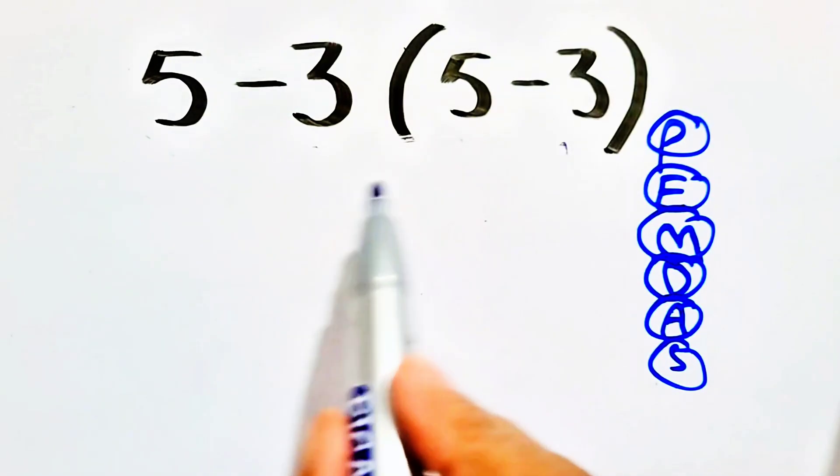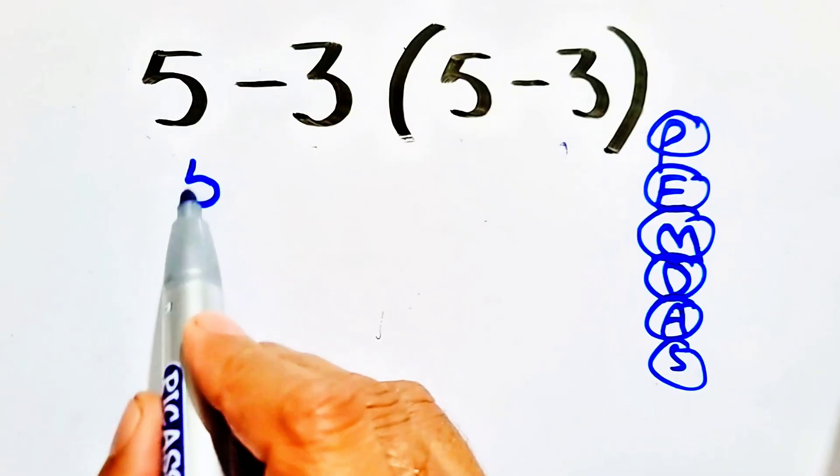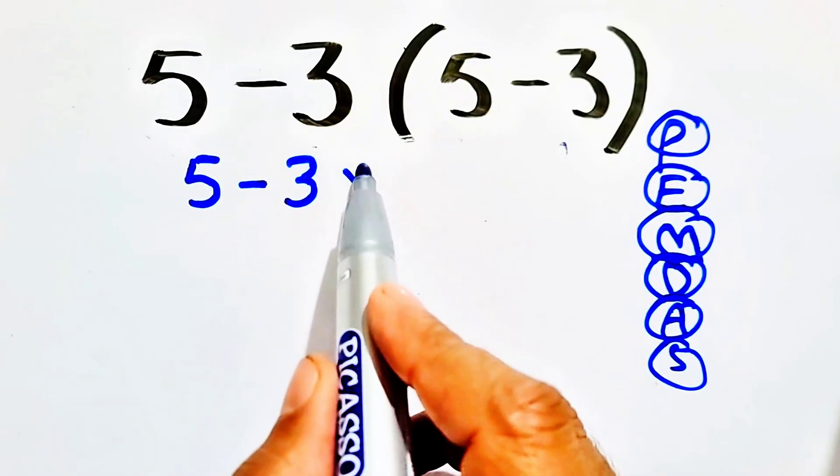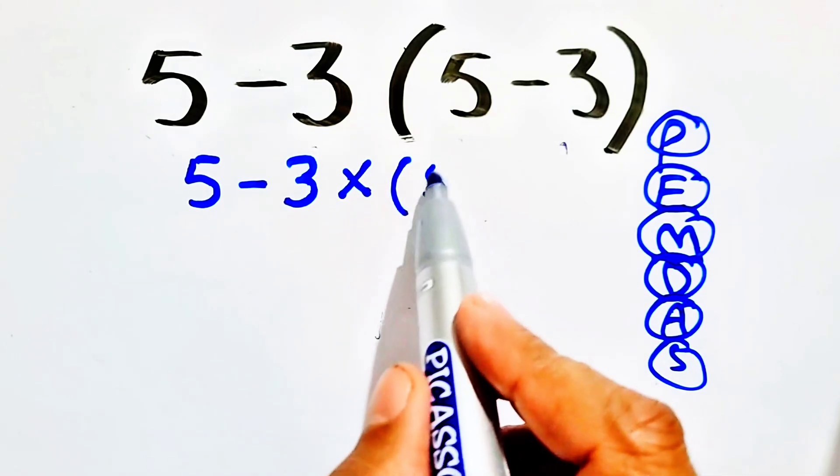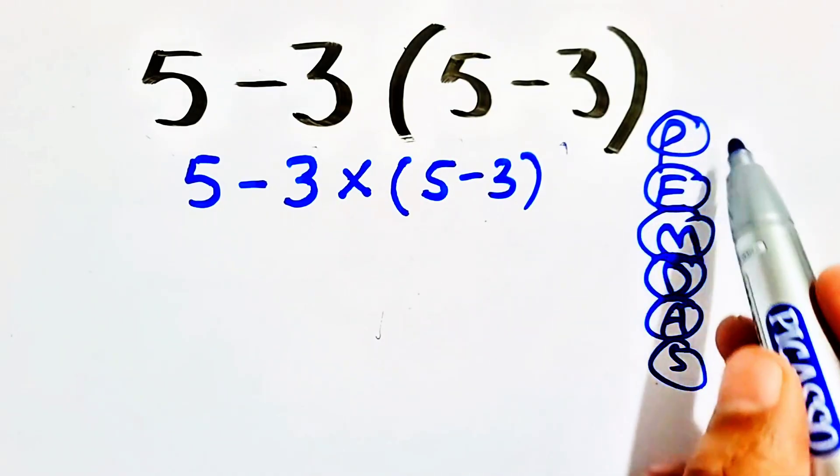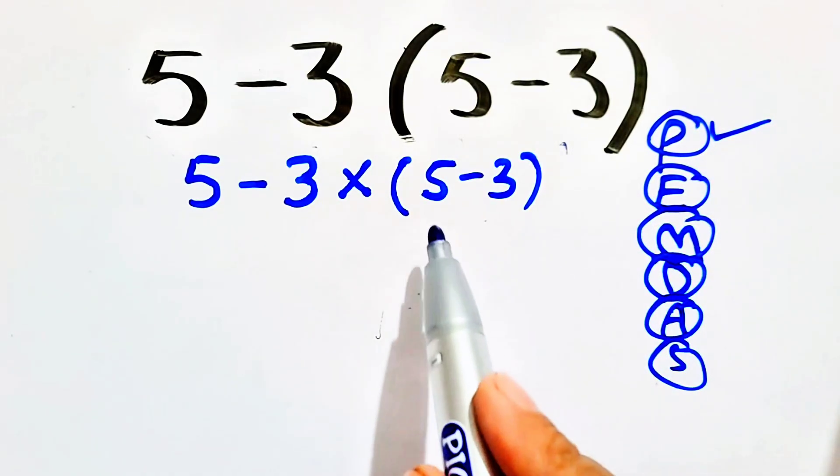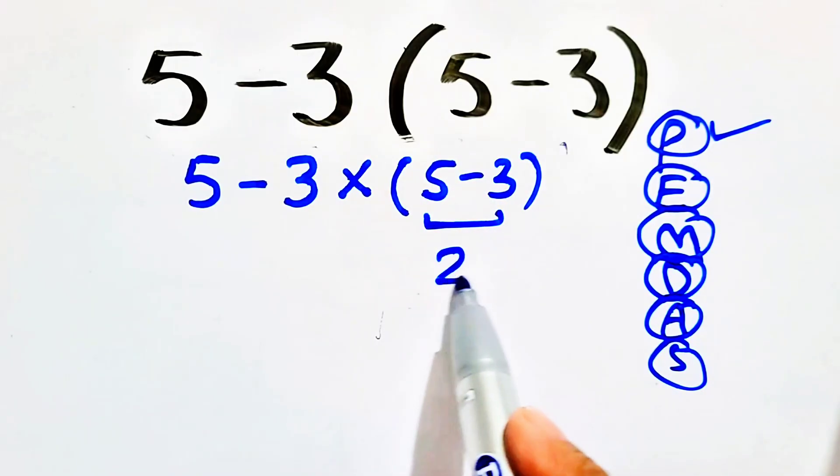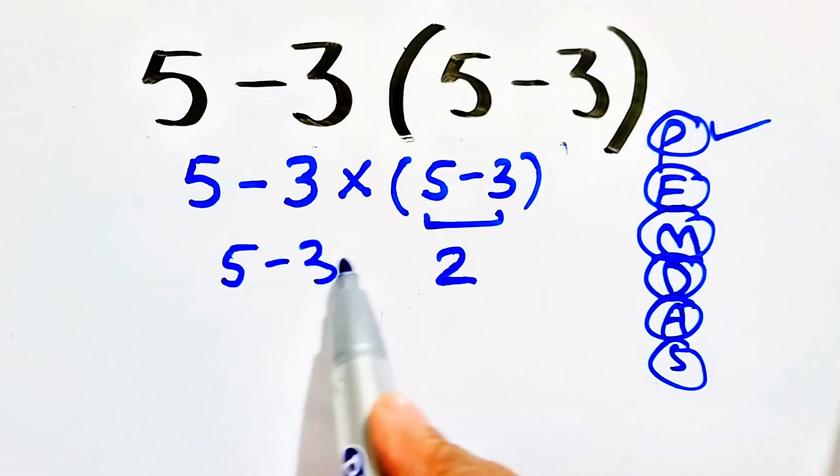So we can rewrite this question as 5 minus 3 multiplied by parentheses 5 minus 3. According to this rule we have to follow parentheses first. So 5 minus 3 will be equal to 2, and the remaining portion will be written as it is.